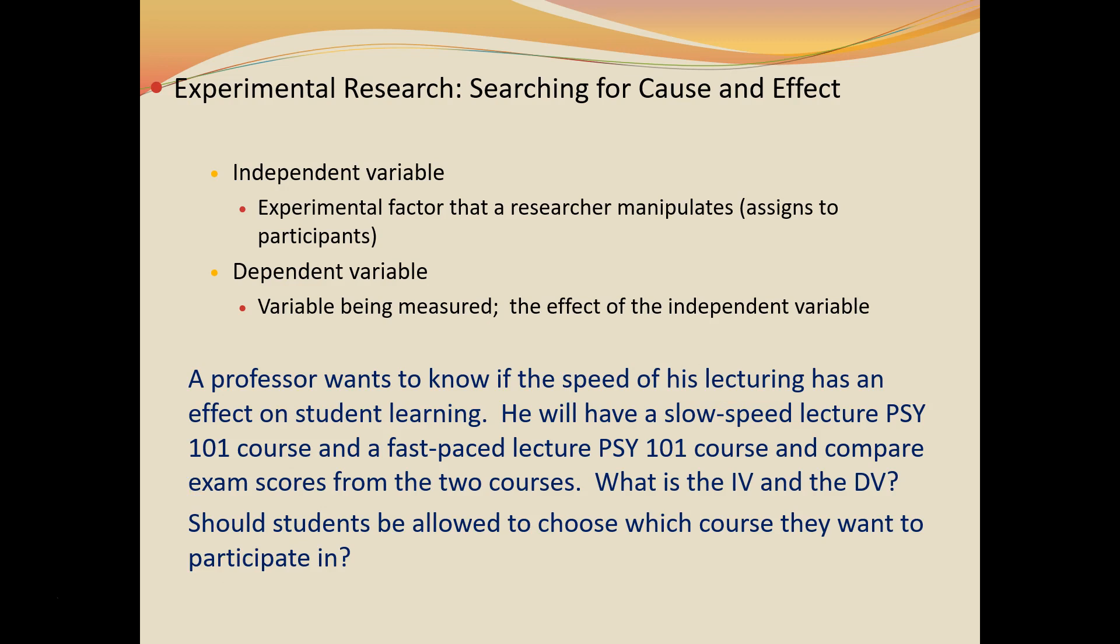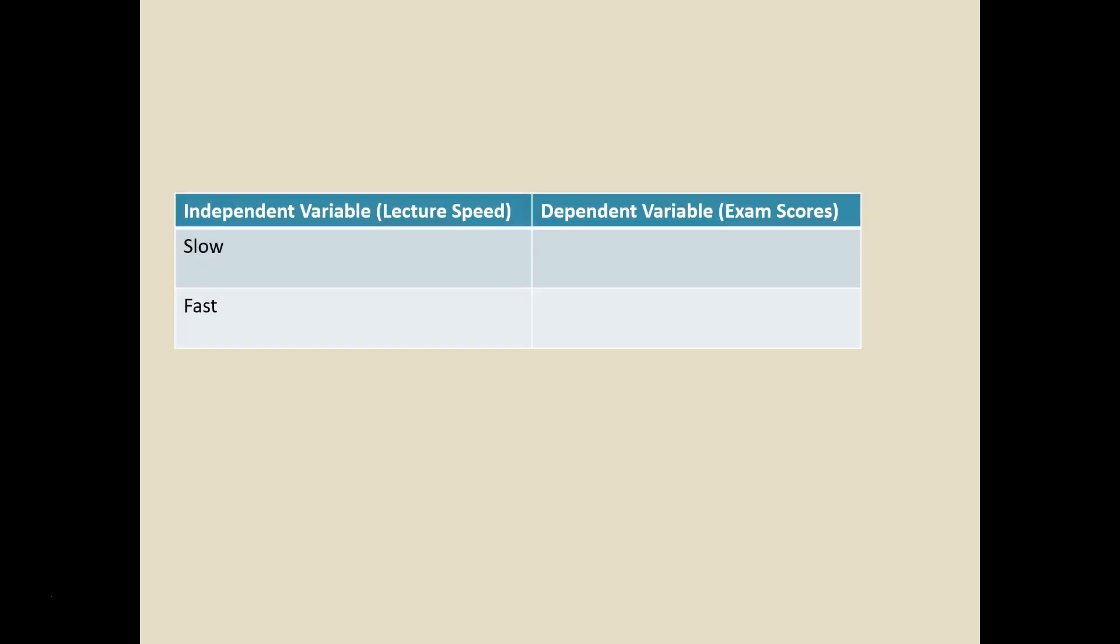And you'll see an extra question I have on the slide right at the bottom. It says, should students be allowed to choose which course they want to participate in? Well, the reason I ask that is because it's an important concept related to good experimental design. And the concept I'm talking about is called random assignment. I'm going to look at this example a little further so you can see why random assignment is so important.